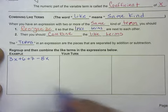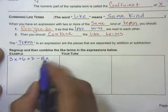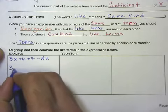The first thing that I want to do is get my like terms reorganized so that they're next to each other. So I've got a 3x and a negative 8x. I'll put those next to each other.